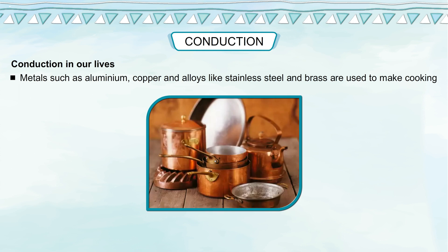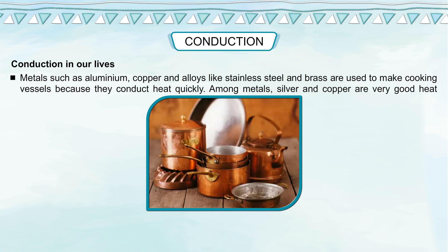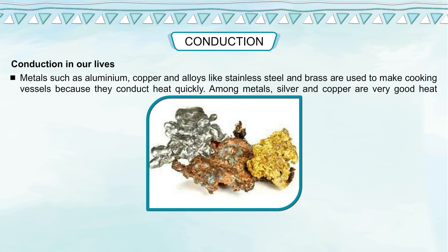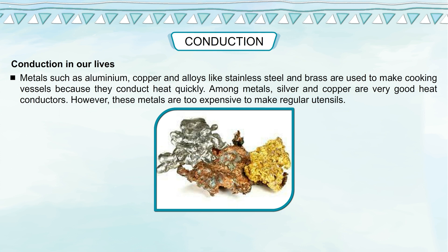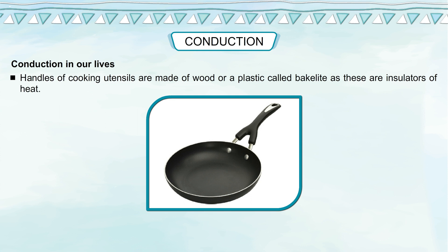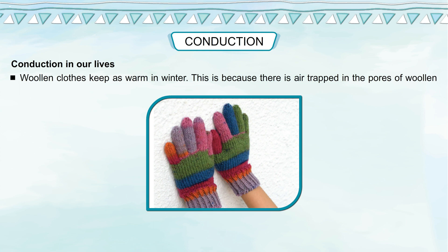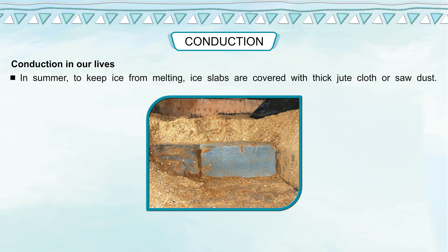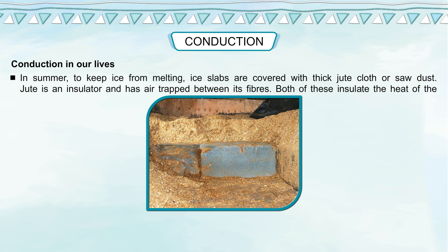Conduction in our lives: Metals such as aluminium, copper, and alloys like stainless steel and brass are used to make cooking vessels because they conduct heat quickly. Silver and copper are very good heat conductors, but too expensive for regular utensils. Handles of cooking utensils are made of wood or bakelite as these are insulators of heat. Woollen clothes keep us warm in winter because air trapped in the pores of woollen clothes acts as an insulator and does not allow body heat to escape. In summer, to keep ice from melting, ice slabs are covered with thick jute cloth or sawdust, as jute is an insulator with air trapped between its fibres.